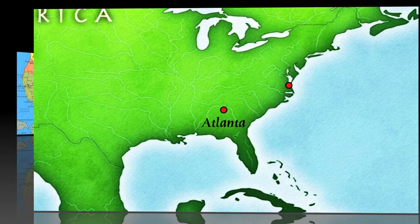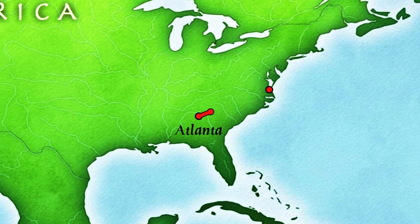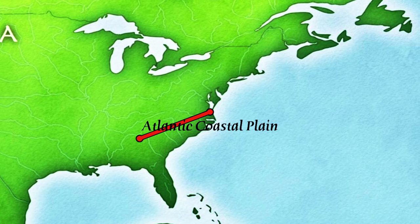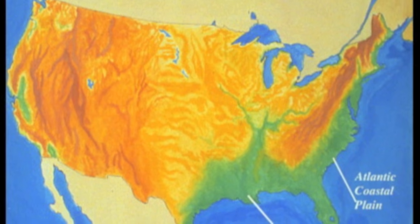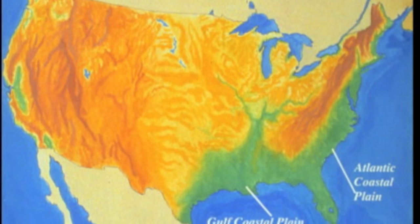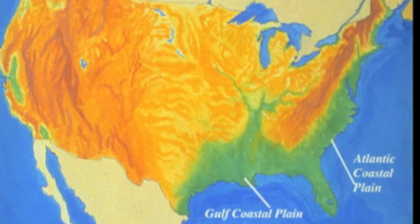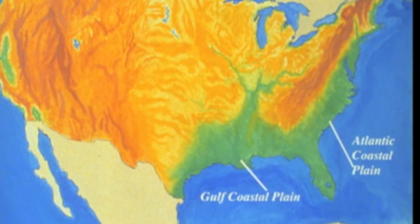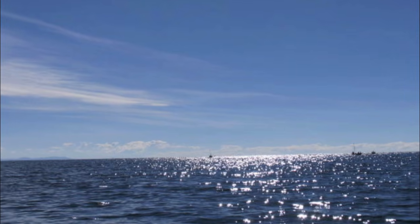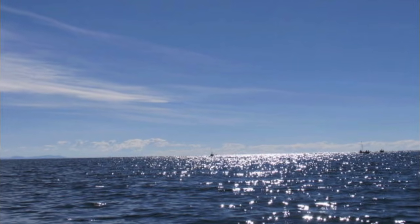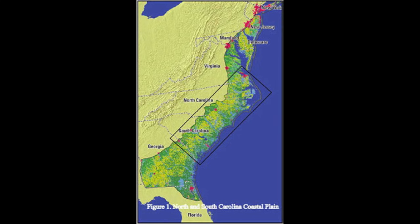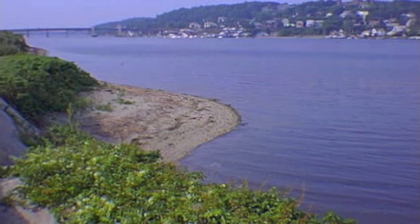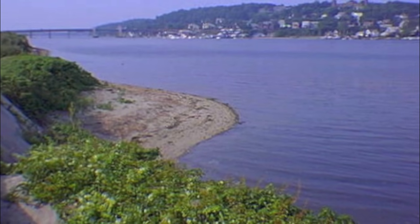We are going to begin with the Atlantic Coastal Plain. The Atlantic Coastal Plain is the lowland area that borders the Atlantic Ocean in the eastern United States. It has excellent harbors and is home to many people.